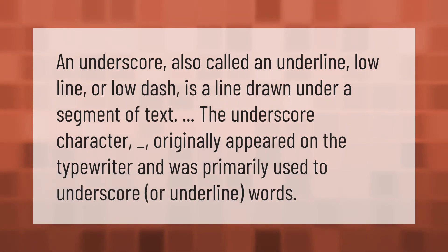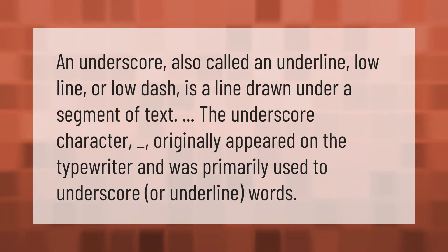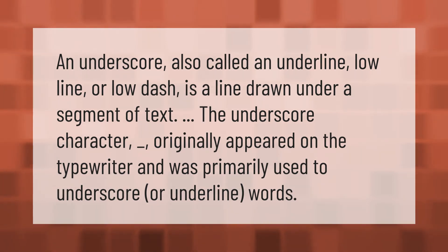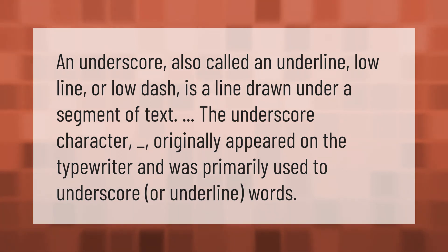An underscore, also called an underline, low line, or low dash, is a line drawn under a segment of text. The underscore character originally appeared on the typewriter and was primarily used to underscore or underline words.